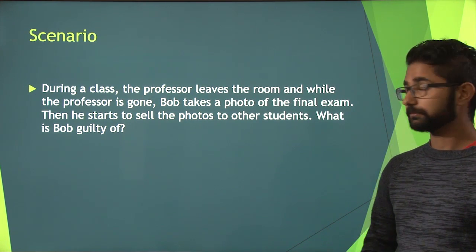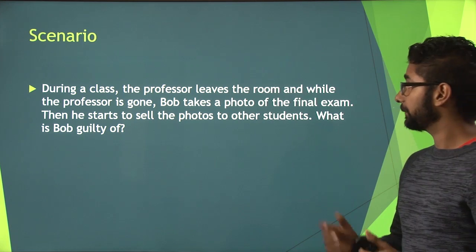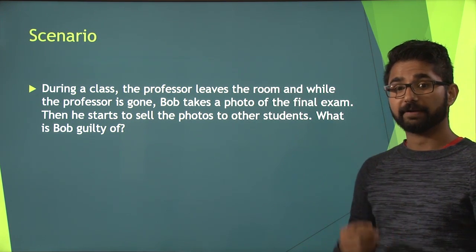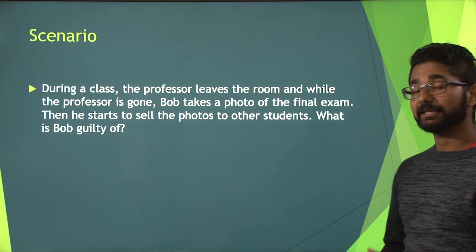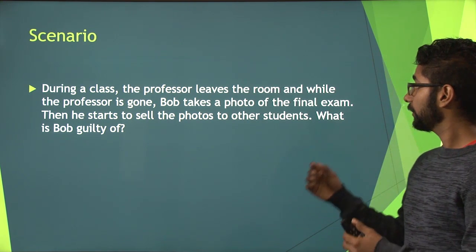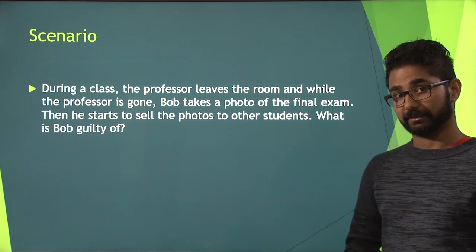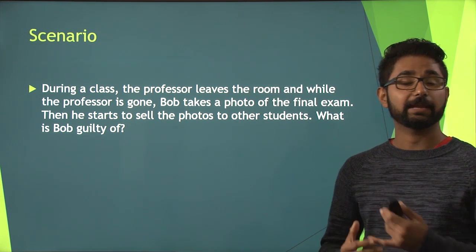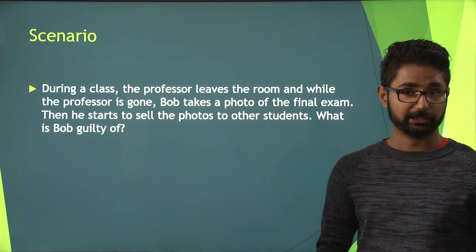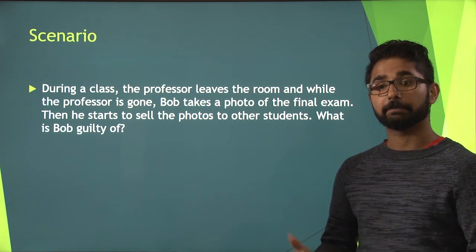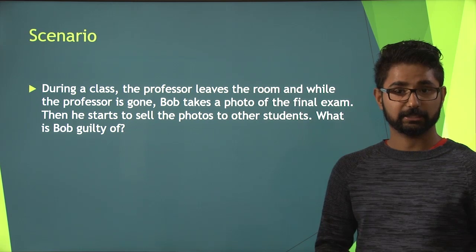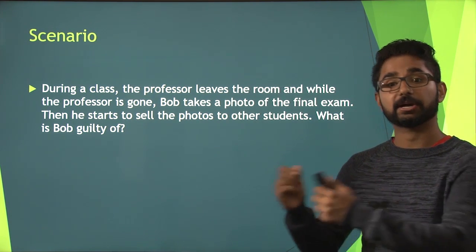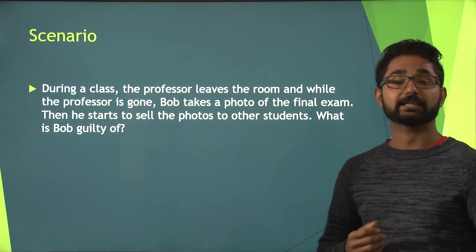For the last scenario: during a class the professor leaves the room, and while the professor is gone Bob takes a photo of the final exam and then starts to sell the photos. What is Bob guilty of? Well, to start off he's guilty of improper access to exam materials because he took a picture of the exam before it was given out. He's also guilty of aiding and abetting because he's helping other students to cheat by selling these photos.